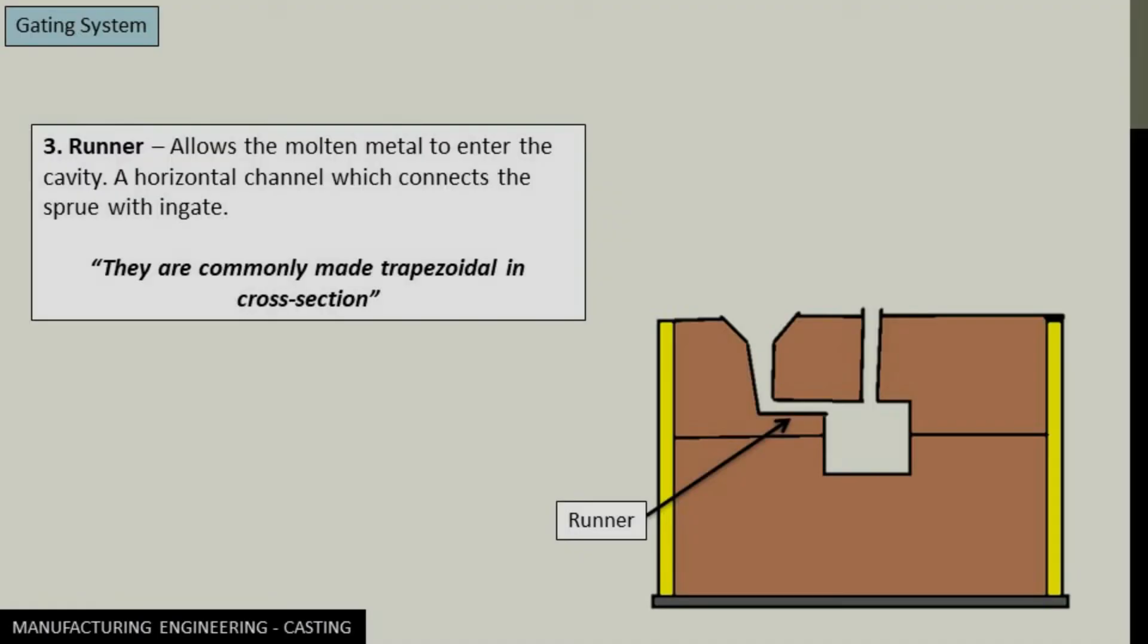Next we have runner. A runner allows the molten metal to enter the cavity. It is basically a horizontal channel which connects the sprue with the ingate, and the ingate was the entry of the molten metal to the cavity.